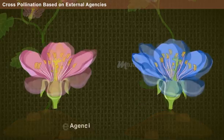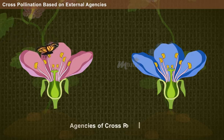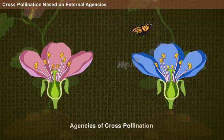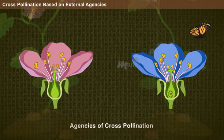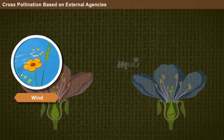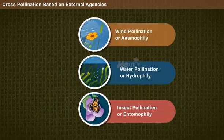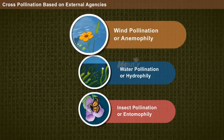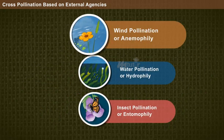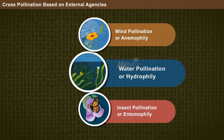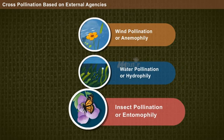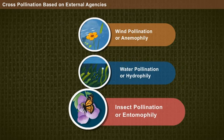Agencies of cross-pollination: several agencies are responsible for the occurrence of cross-pollination, but the common ones are wind, water, and insects. These correspond to wind pollination (anemophily), water pollination (hydrophily), and insect pollination (entomophily).